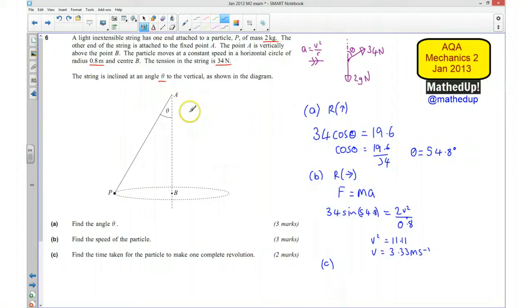But we want to know time, so time equals distance over speed. Time is the distance it travels in one complete revolution over the speed.